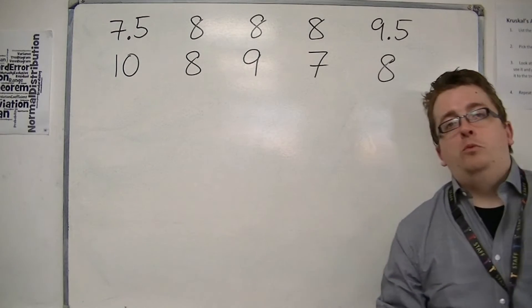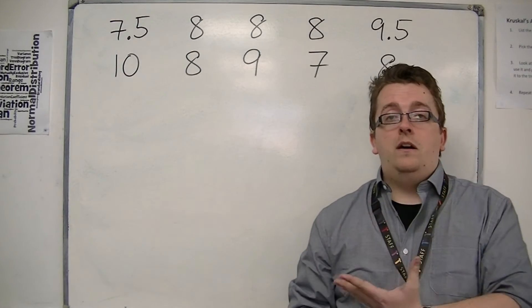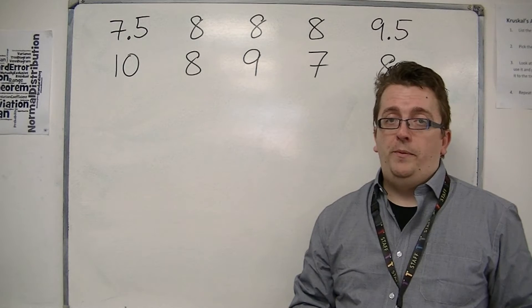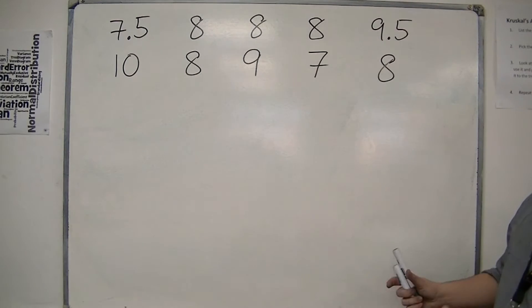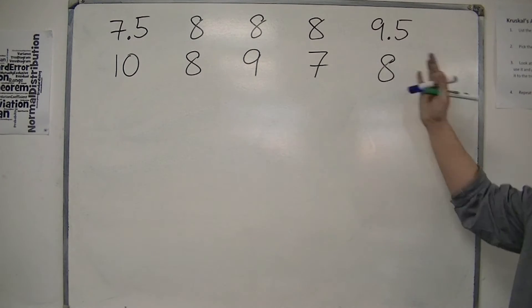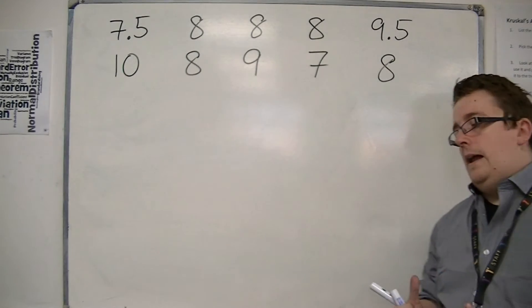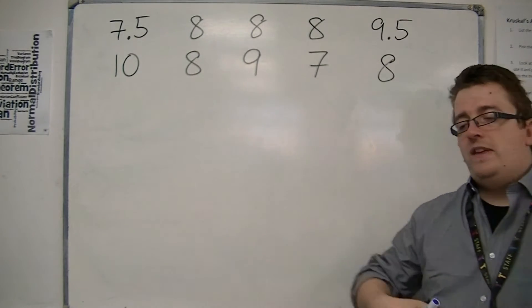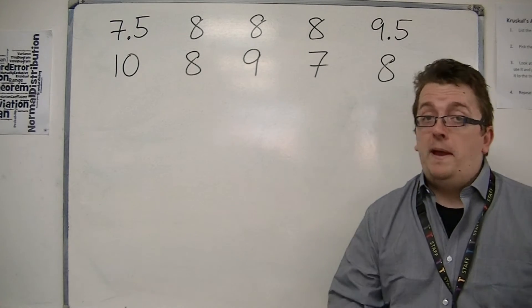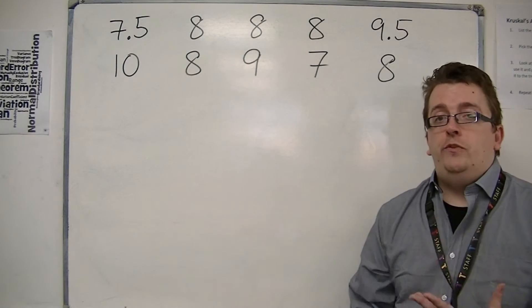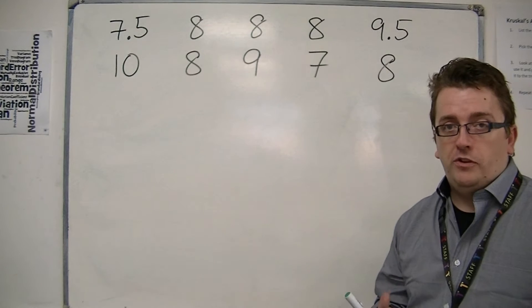So in this first example what you're going to imagine is that we are looking at a shoe shop. And the owner looks back at the ten last pairs of shoes that he has sold and he wants to use one of the averages to inform him about which shoes he should be stocking the most of.